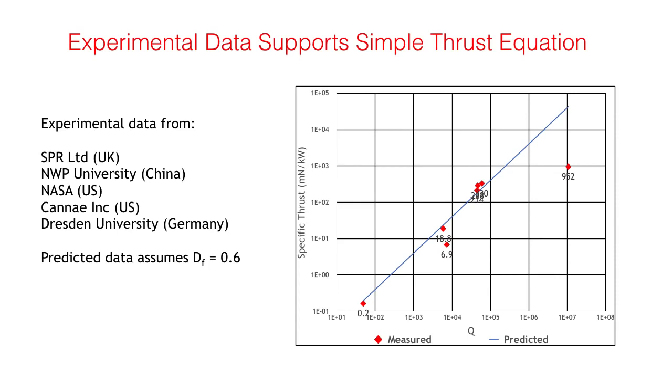The chart shows specific thrust—that is, thrust in millinewtons per kilowatt of input power—plotted against the measured Q of the cavity. The data points can be compared with a predicted specific thrust characteristic shown in blue, which is based on the simple static thrust equation we have derived and assumes a design factor of 0.6. As can be seen, five of the thrusters sit very closely on the predicted line, whereas the two outliers are thrusters that rely on a dielectric element inside the cavity.